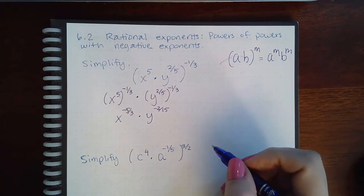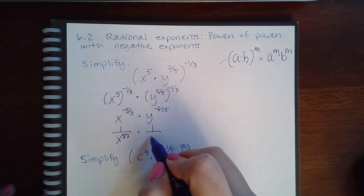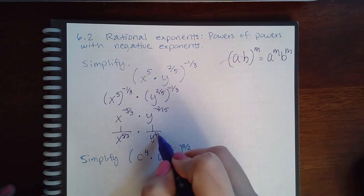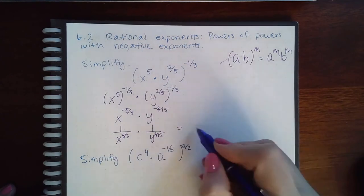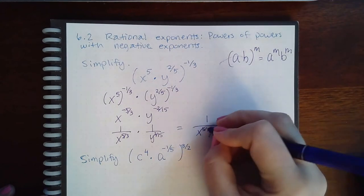So that means this one is going to be one over x to the five thirds, this one's going to be one over y to the two fifteenths. And then if I combine it into one expression we get one times one is one, and x to the five thirds power times y to the two fifteenths power. And this is the final answer.